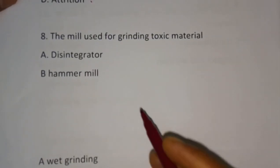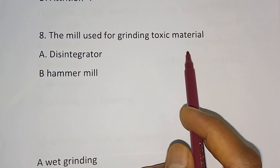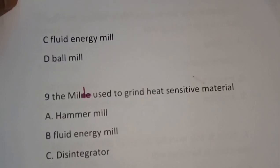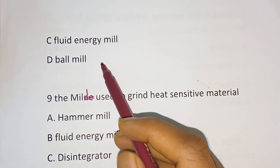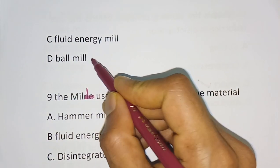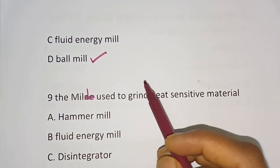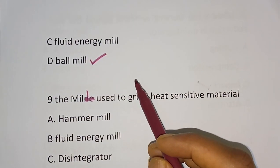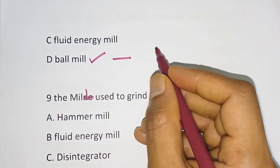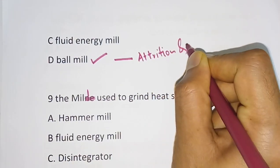Question number 8: The mill used for grinding toxic material. Options are: disintegrator, hammer mill, fluid energy mill, ball mill. The correct answer is Option D — ball mill. Ball mill is used for the size reduction of toxic material. The working principle of ball mill is impact and attrition.